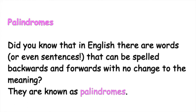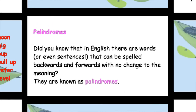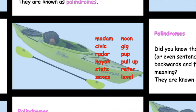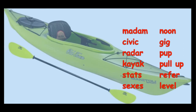Palindromes. Did you know that in English there are words or even sentences that can be spelled backwards and forwards with no change to the meaning? They are known as palindromes. Here are some examples.